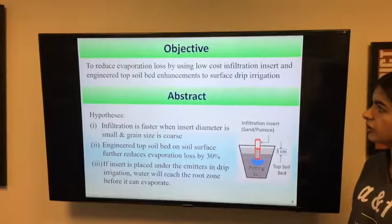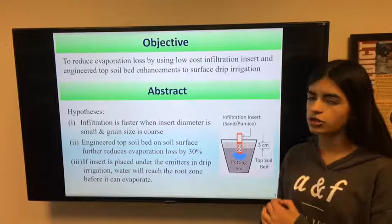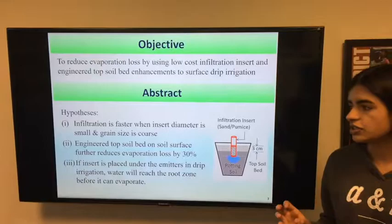My hypotheses are that infiltration is quicker when the insert diameter is smaller with the grain size inside that is coarse, and engineered topsoil bed on the soil surface will further reduce evaporation loss by 30%.